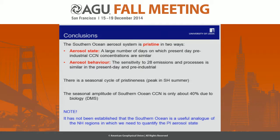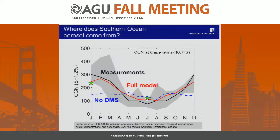A question from the audience: CCN measurements in the southern hemisphere from the SULSEKS project in the 90s showed concentrations were higher in summer than winter — can you verify that? The speaker confirms: yes, that's what the model shows. The questioner notes the speaker described summer as more pristine. The speaker clarifies: pristine means like the pre-industrial, not clean or low-concentration. High particle concentrations can still be pristine.